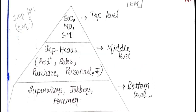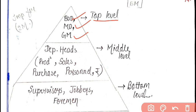Now let's see who the people in the three levels of management are. In the top level there is the Board of Directors (BOD), the Managing Director (MD), and the General Manager. The Board of Directors is a group of directors — they are the brain of the company. They decide policies and guide the company, just like the brain functions in a body. The Managing Director and General Manager are also part of the top level.